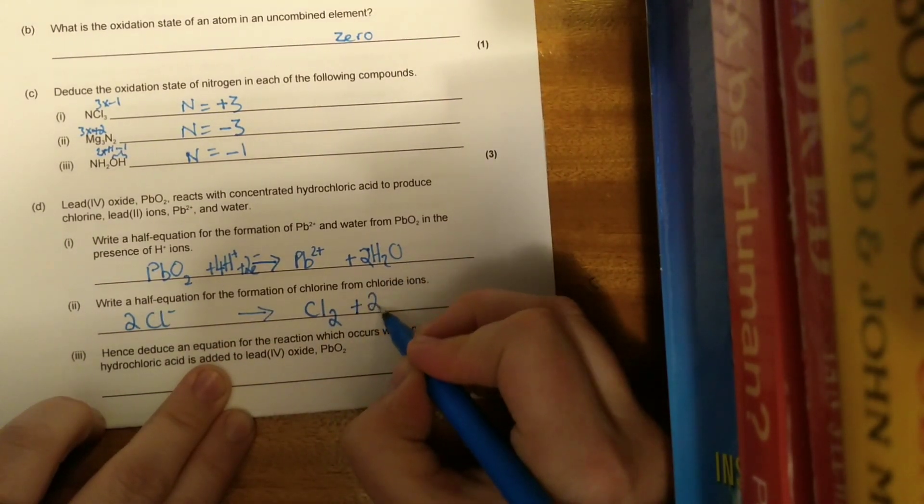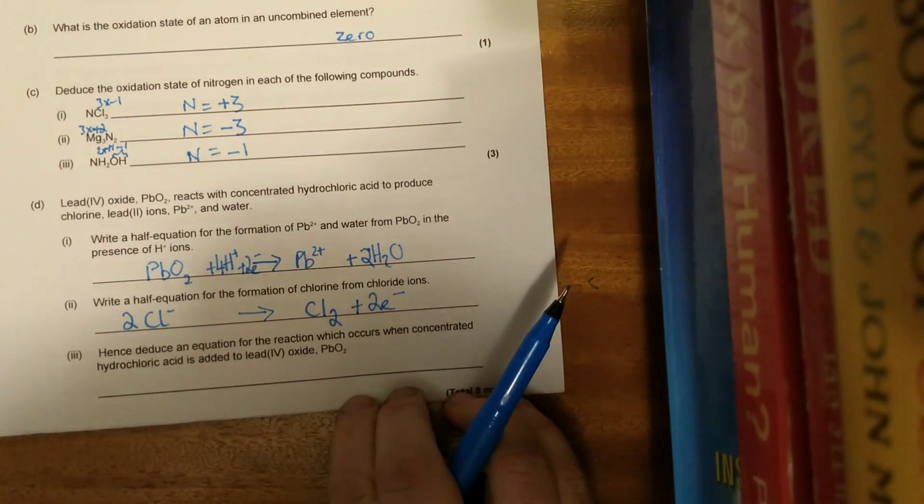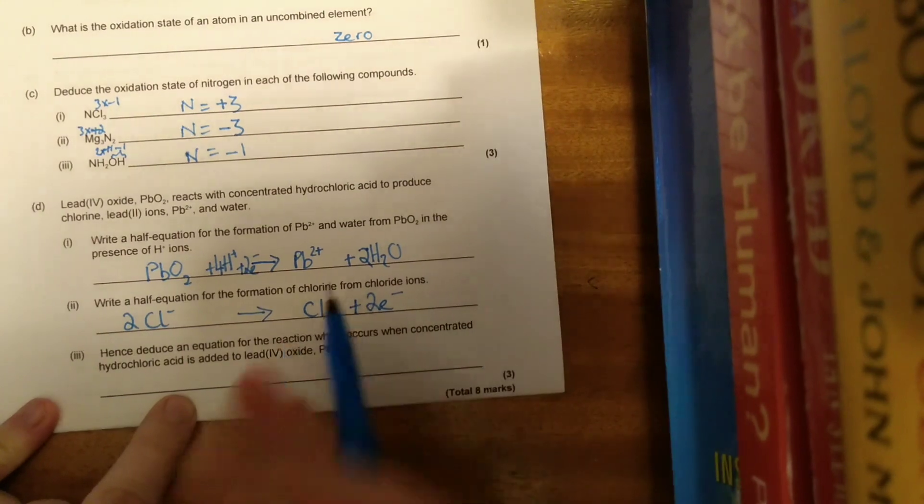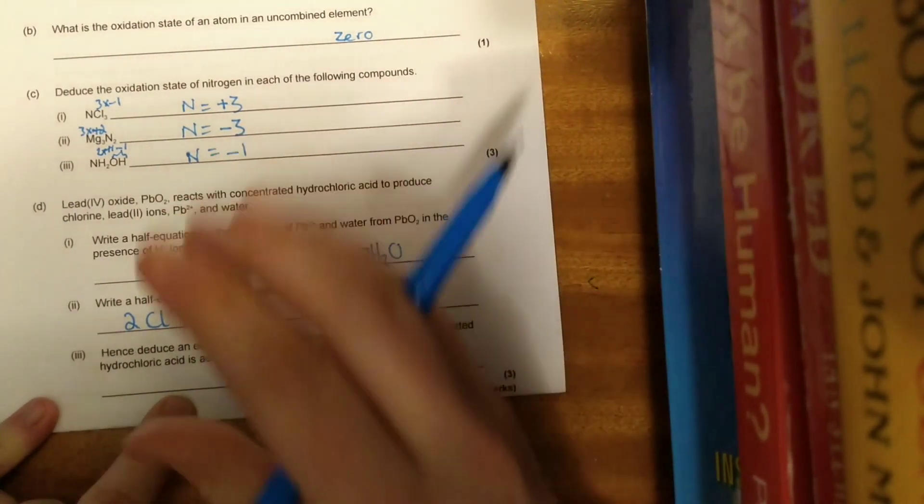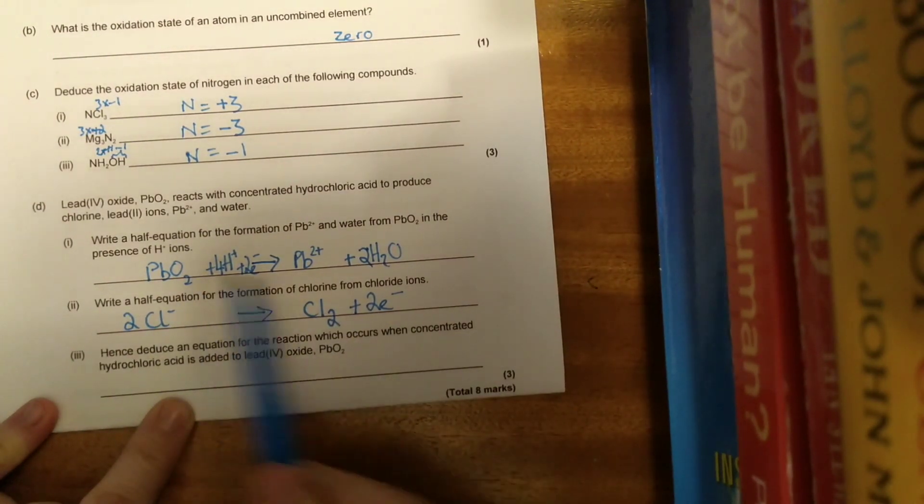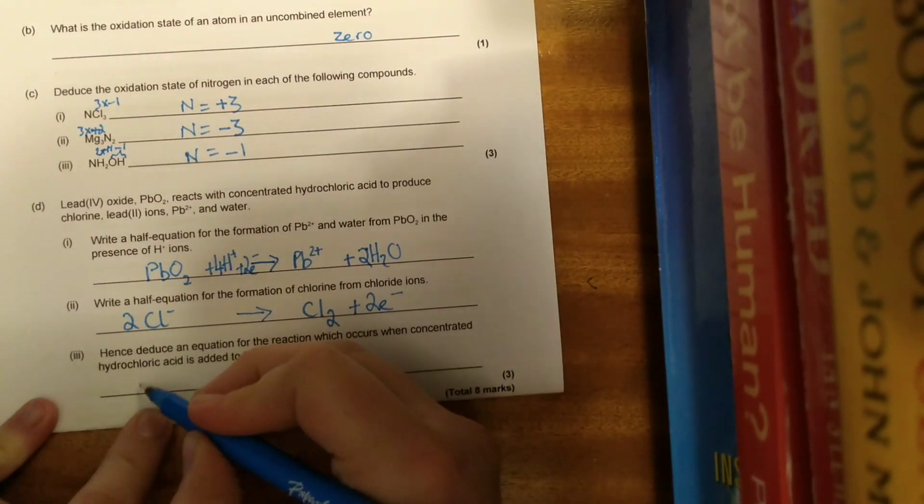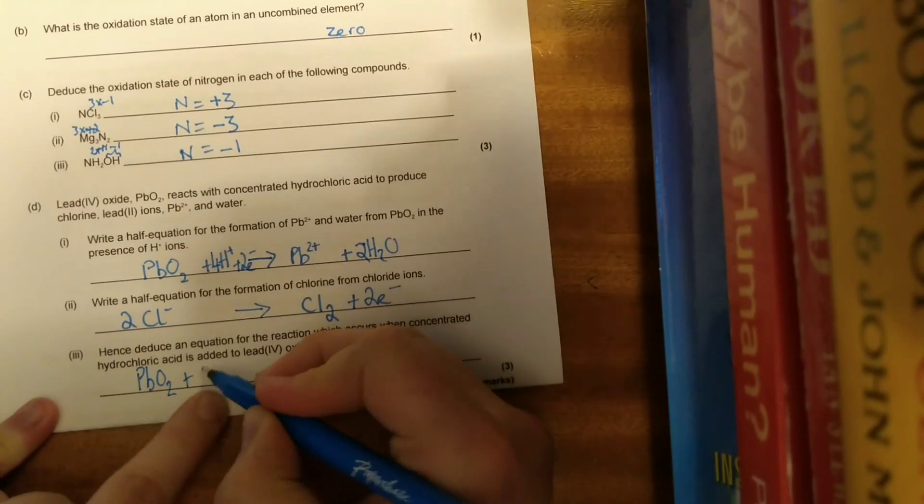We're then asked to write a half equation for the formation of chlorine from chloride ions. We've got our chloride ions, we're going to be forming chlorine which is Cl2. So we need to have two chlorines. We're going from negative up to zero, so we're going to be gaining electrons on this side, two e minus.